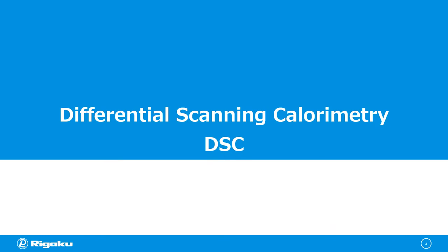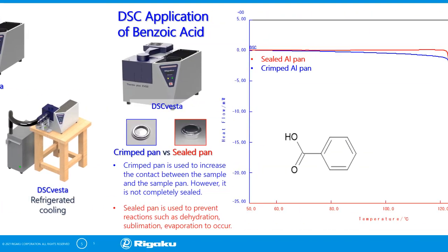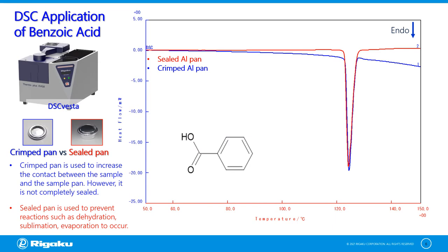From this slide onwards, we will be introducing applications using differential scanning calorimetry or DSC. For DSC applications in thermal analysis, selecting the appropriate type of sample pan shape largely affects the measurement results of a material.